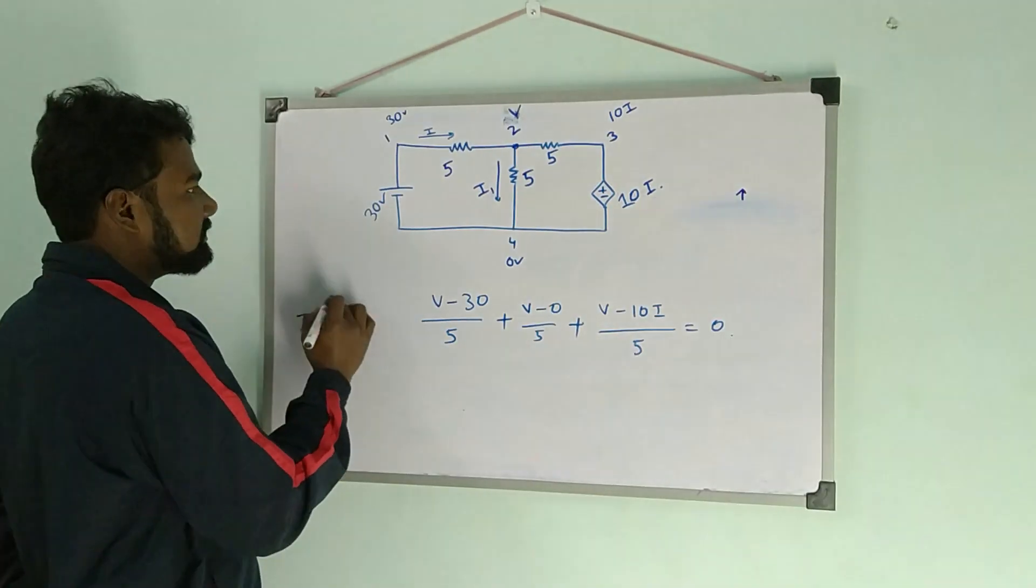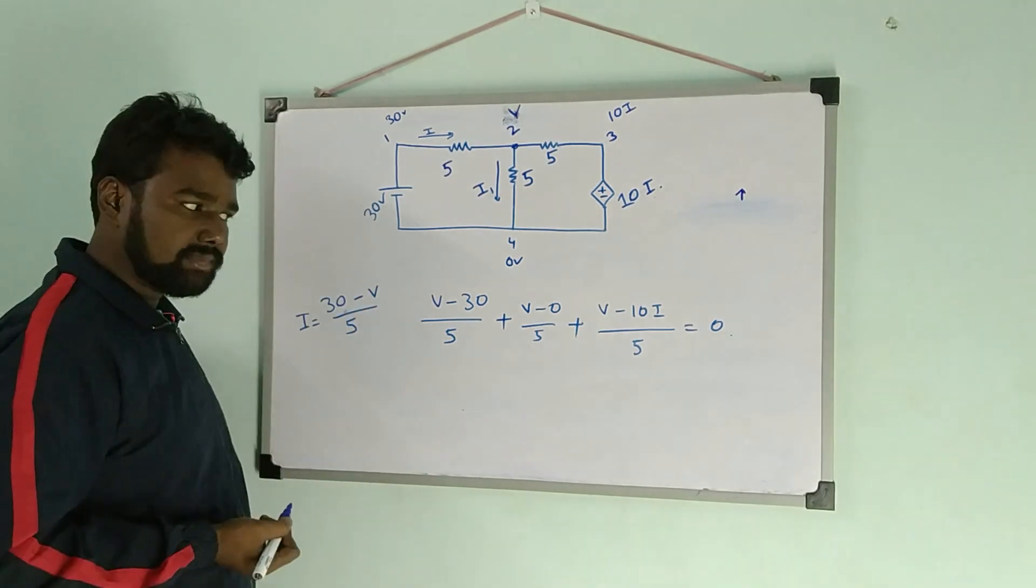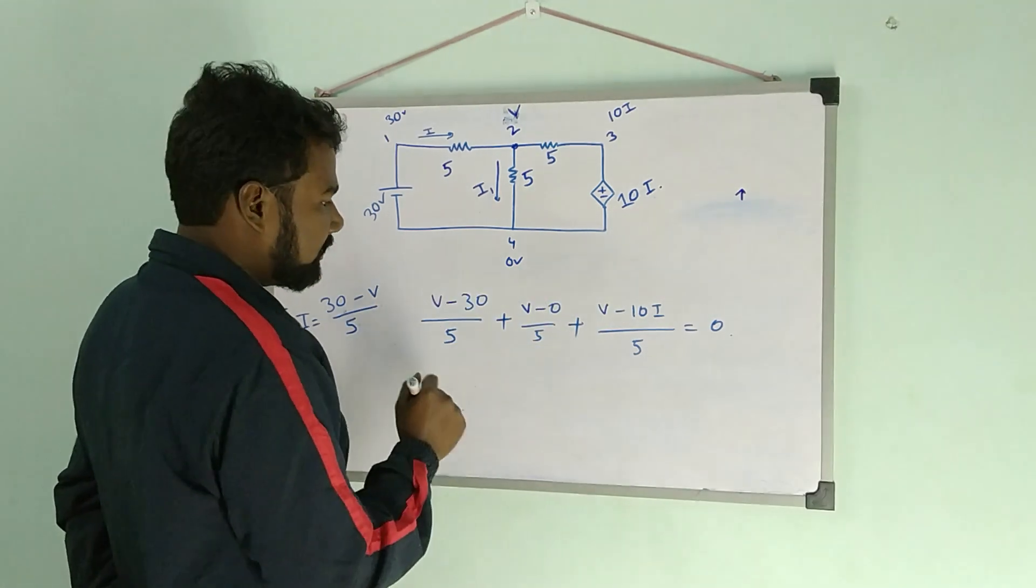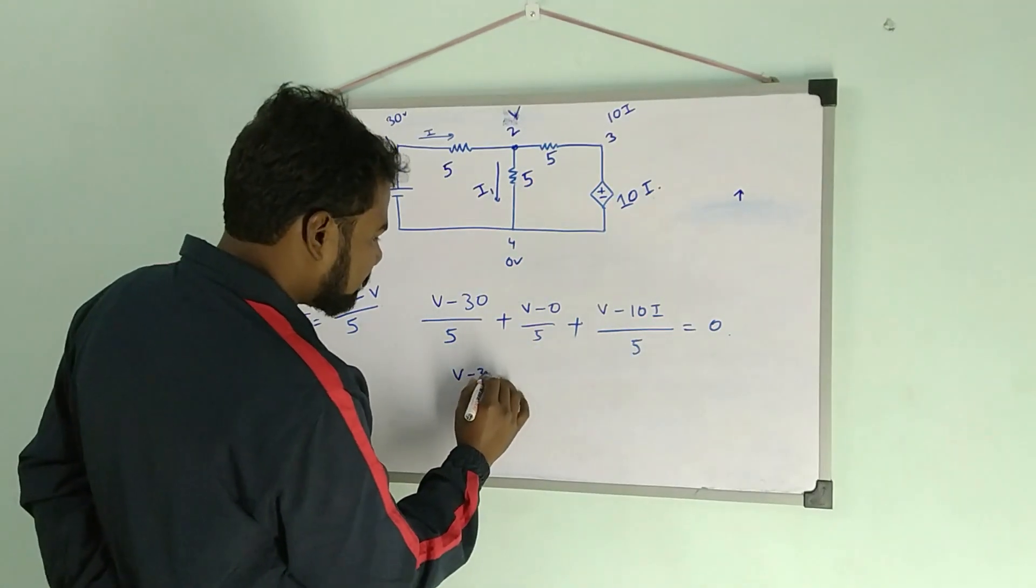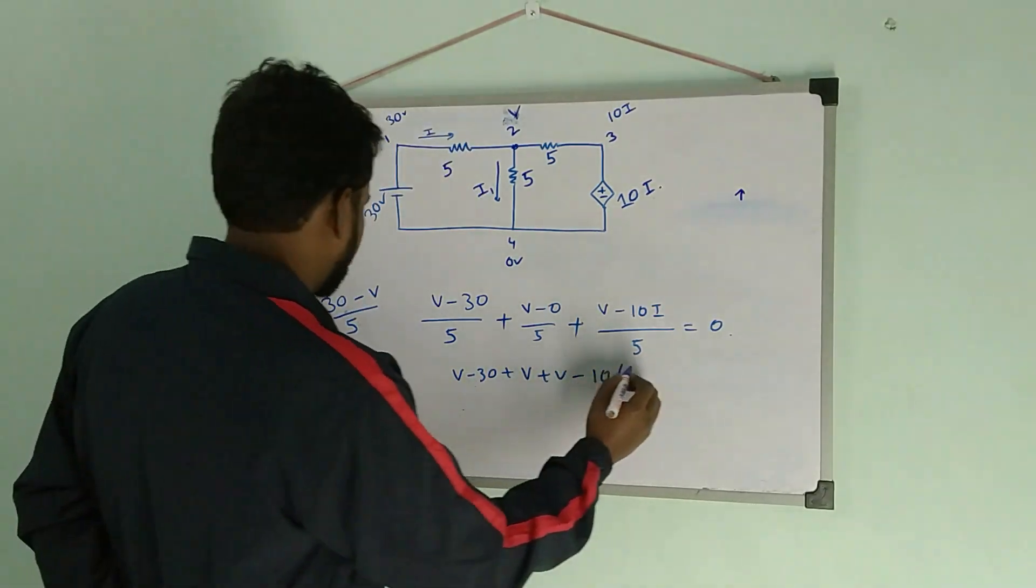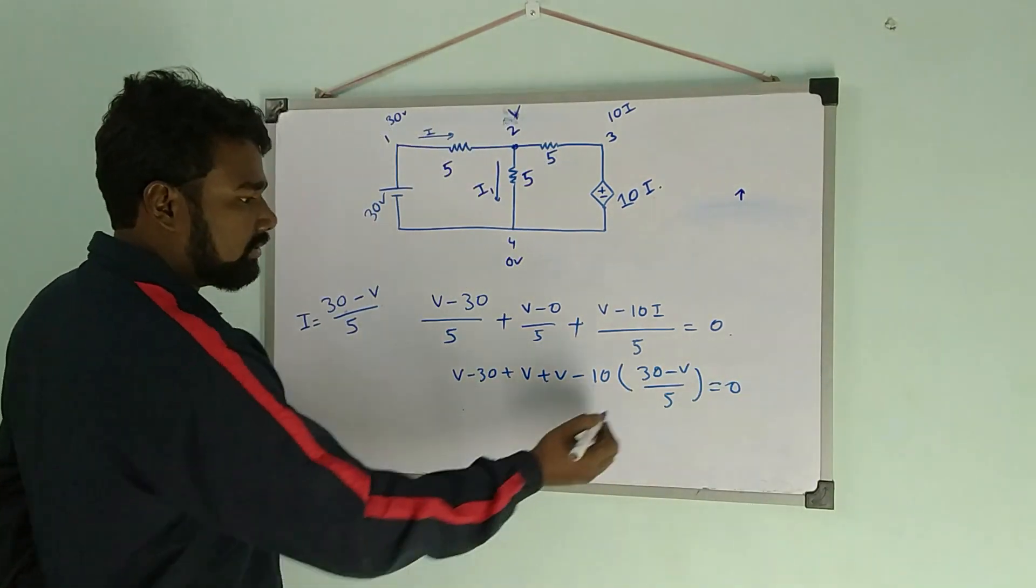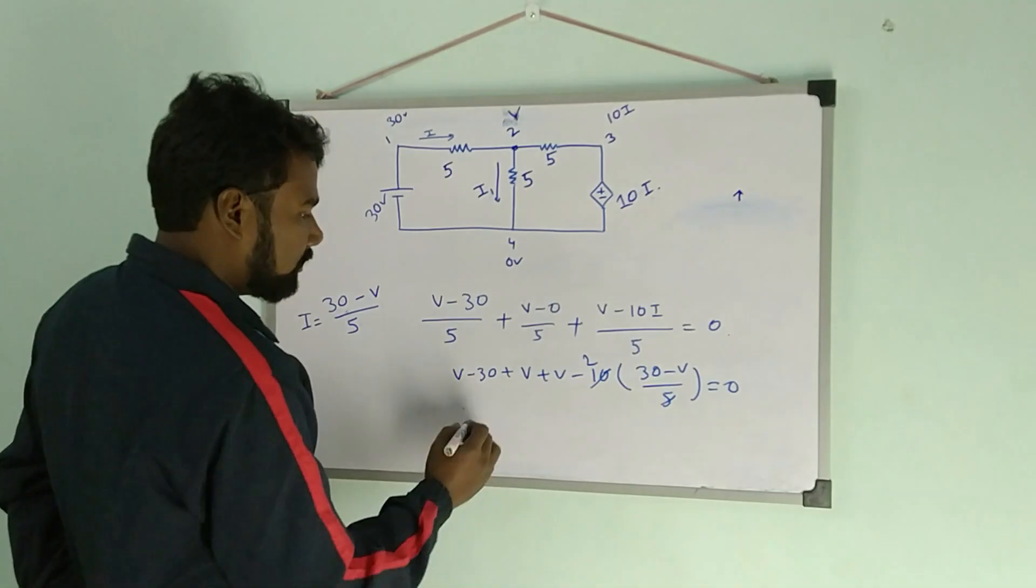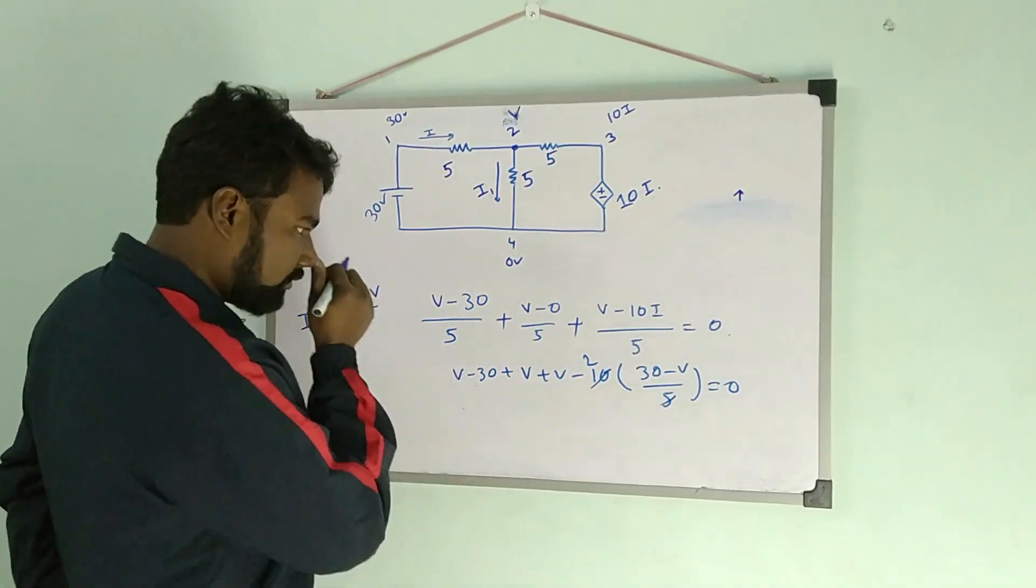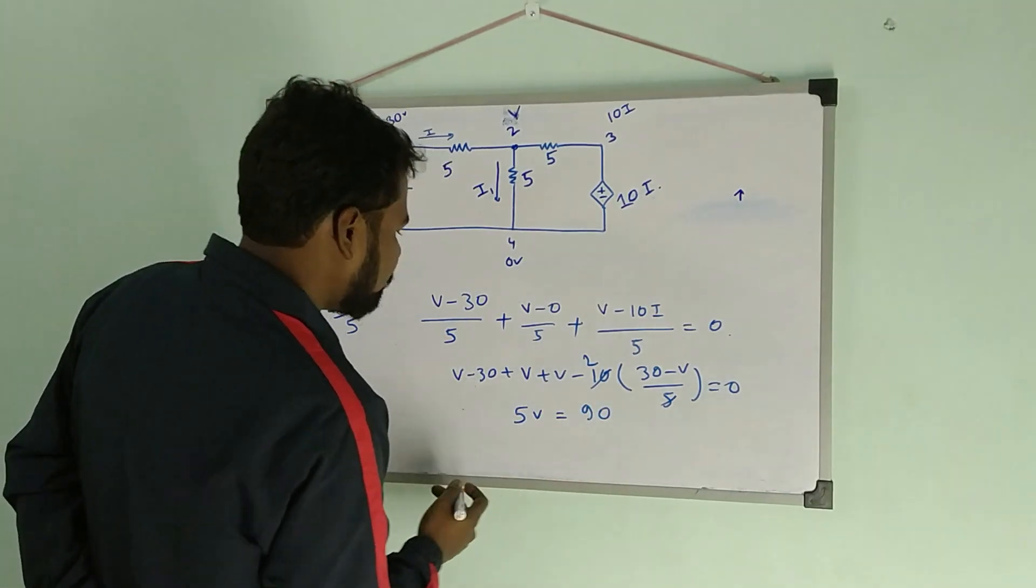So the value of current i is (30 minus v) by 5. Putting this value of i in this equation, then v minus 30 plus v plus v minus 10i—which means 30 minus v, all by 5—is equal to 0.